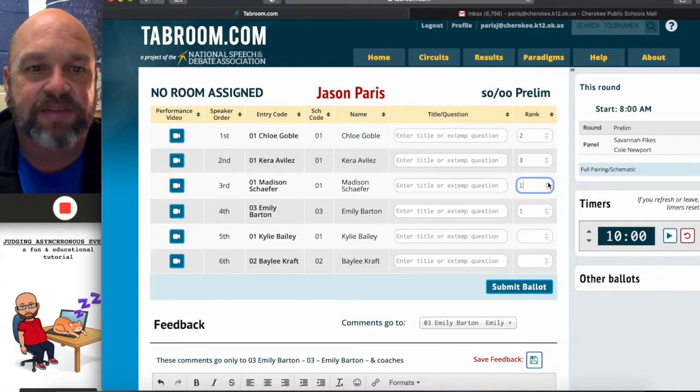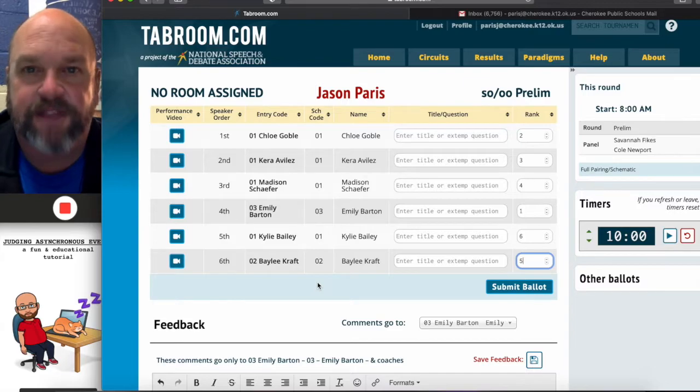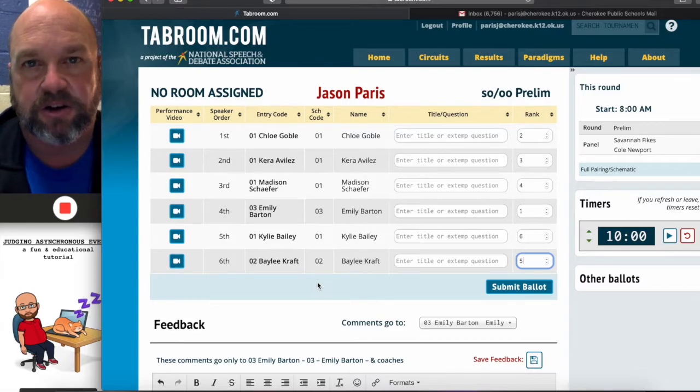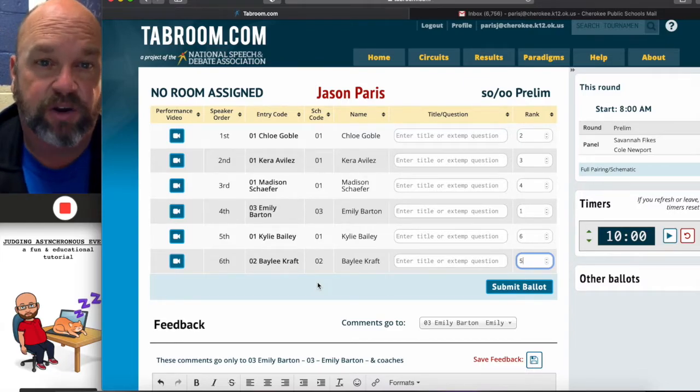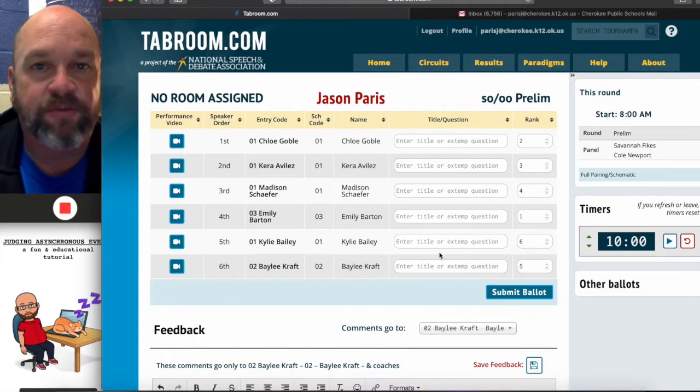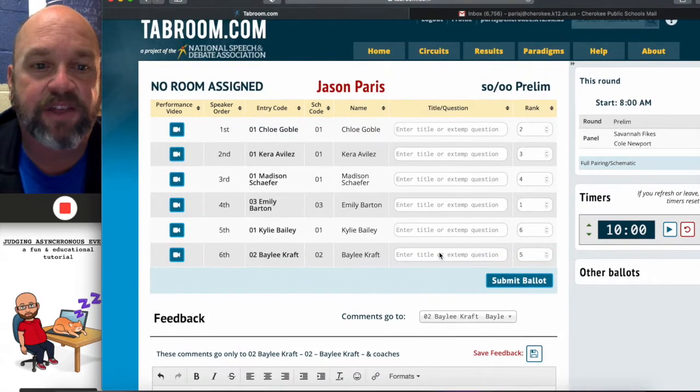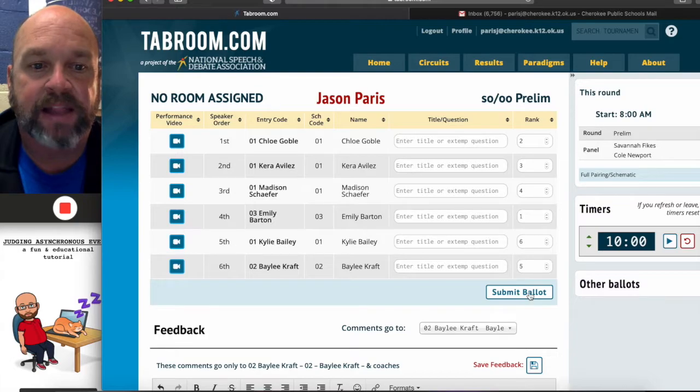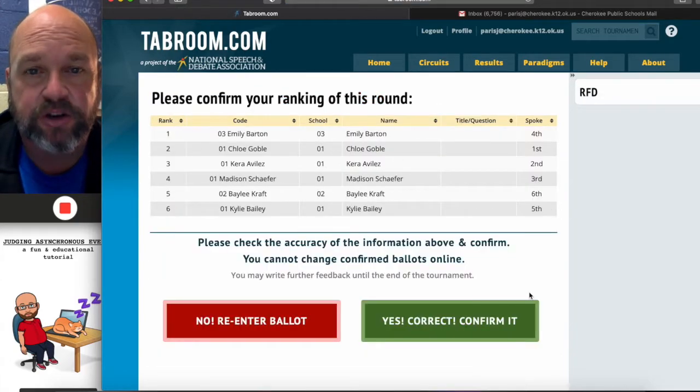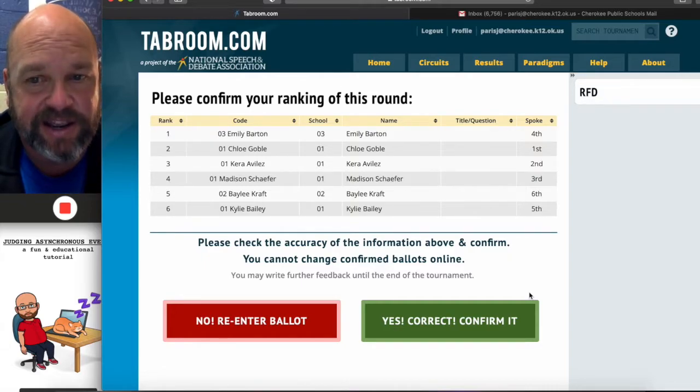Just to make this easy, I'm going to go in order. But, you know, don't do that in real life. But, these kids know that this is a practice tournament and, therefore, none of this is real. So, I've ranked them. I have filled out the ballots and I have saved them. And, now I'm going to submit ballots. So, I'm going to click that. Tabroom's going to give me an option to think about it a little bit. But, I'm going to go with my gut and just stick with it.